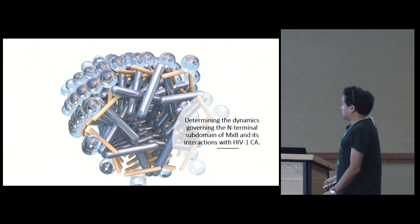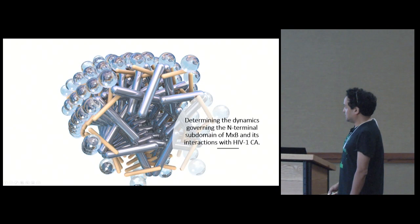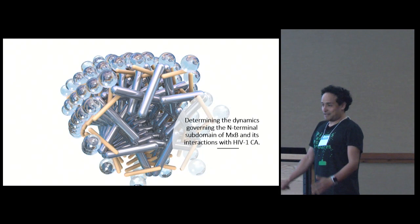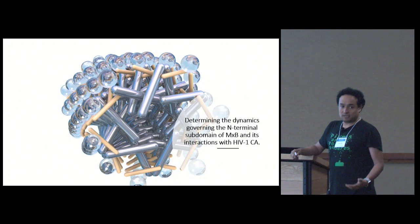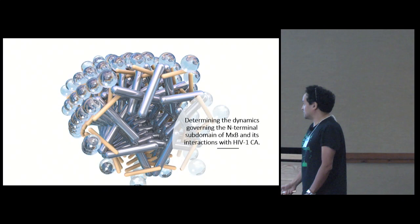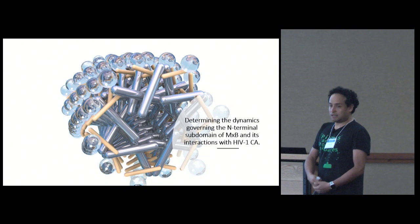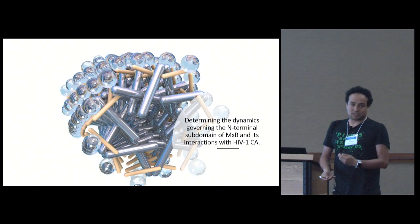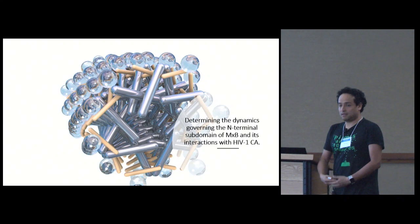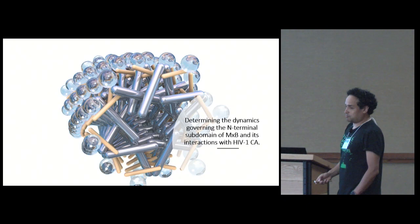I'm going to talk about two short stories. The first is the MXB protein, shown here in an artistic representation using glass, steel, and some brown material. MXB is interesting because it's an endogenous human protein. Unlike many other restriction factors, MXB confers immunity to some human cell types. Every person in this room has MXB in their blood, and MXB is capable of preventing HIV infection — however, it's extremely weak. The goal is to understand how MXB restricts HIV in the body and to develop new therapeutics that potentiate its action.